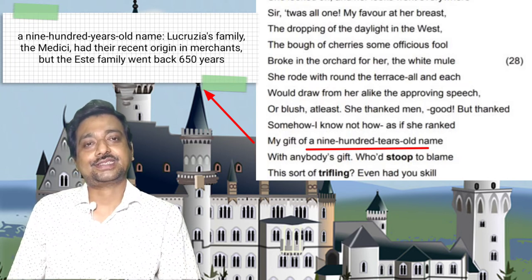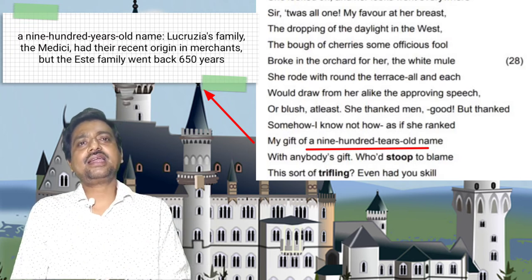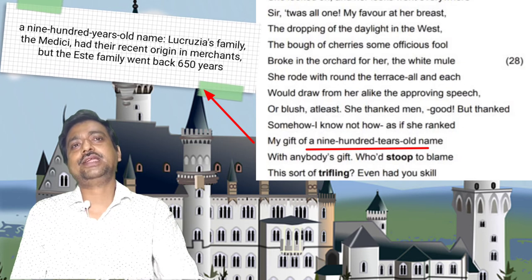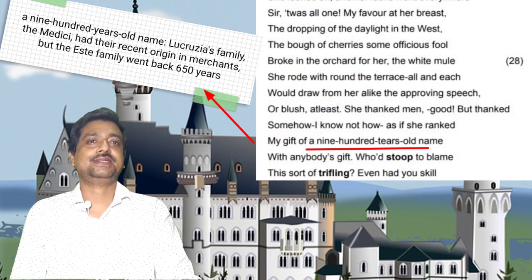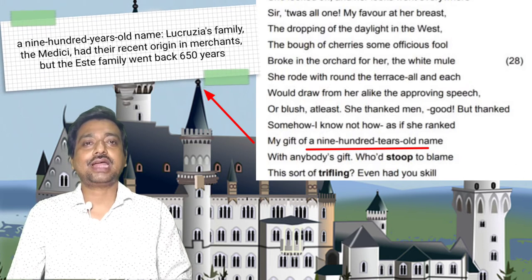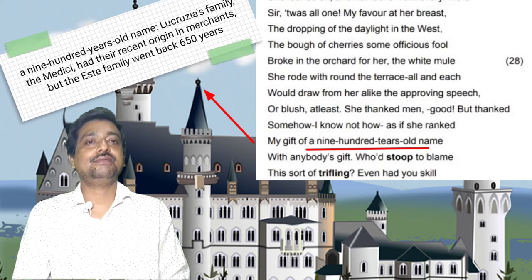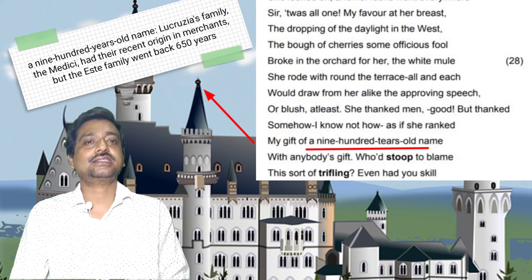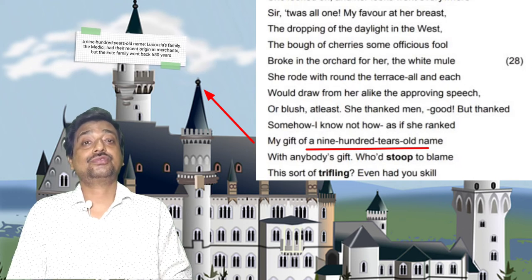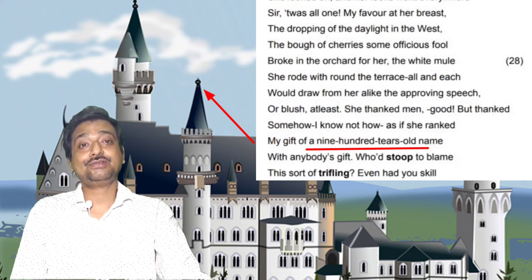The duke is robust in his whims — all possessive and a crude persona — and he wishes to control the full-of-life duchess. He had given her a nine-hundred-year-old name by marrying her, demonstrating that his family has been around for a long time. She did not appear to be thankful for it any more than she was for seeing the sunset. The duke was so offended by that that he refused to stoop to her level to discuss it with her — he considers it trifling to do so.